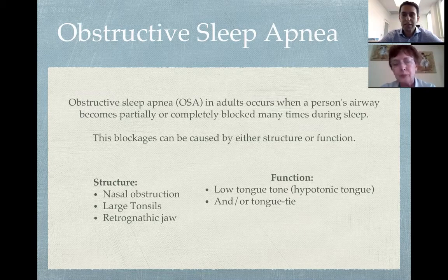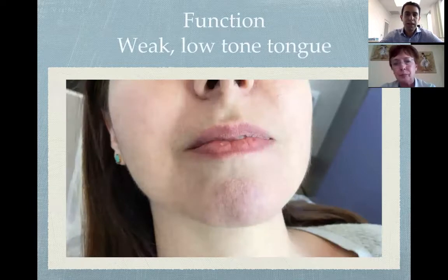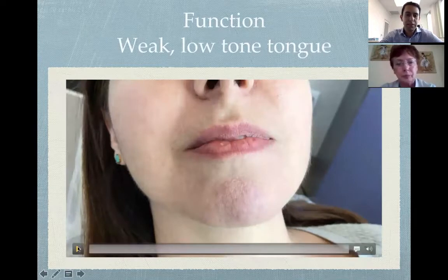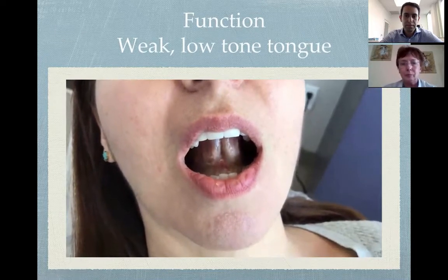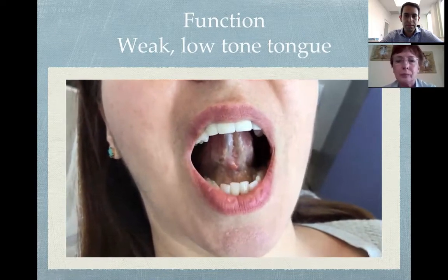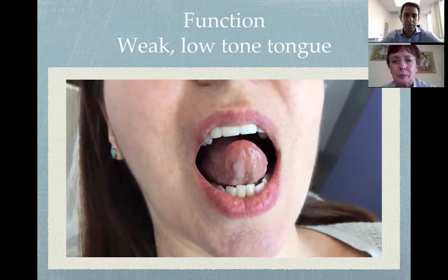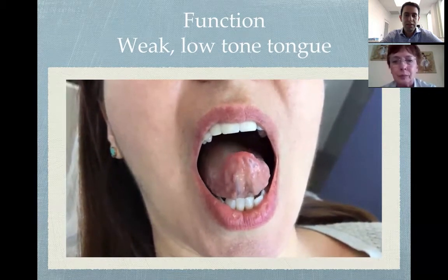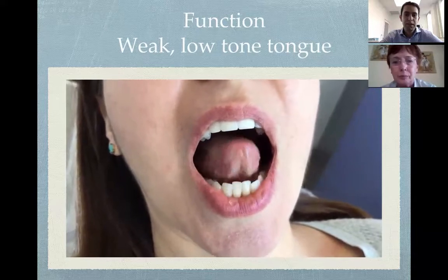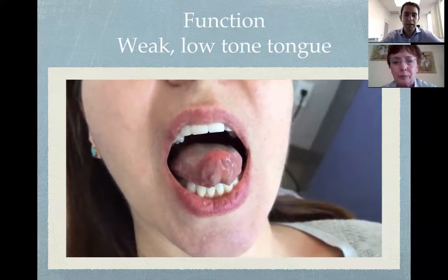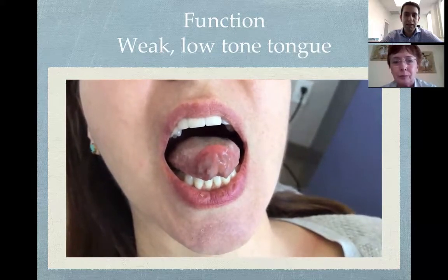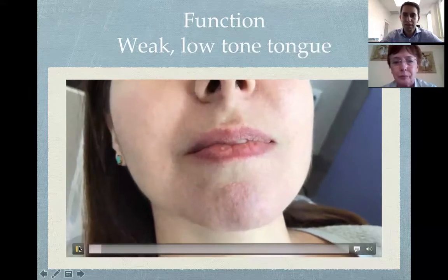These problems can also present in terms of poor function. What we're going to look at specifically today is a low tone tongue. So what do we mean by low tone? Let's take a look at this example. You can see in this example how weak her tongue is — she can barely lift up her tongue and has a lot of compensation just to do that. Sanda, why don't you tell us what you're seeing?